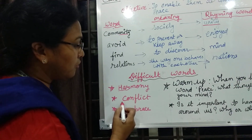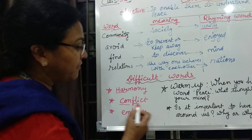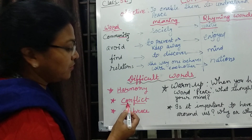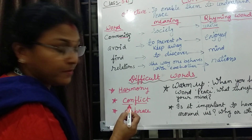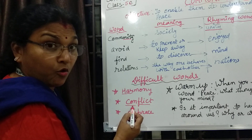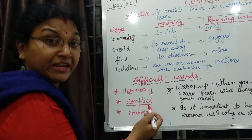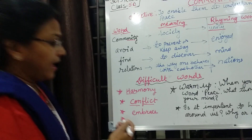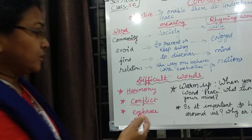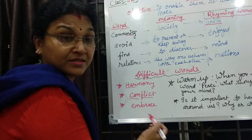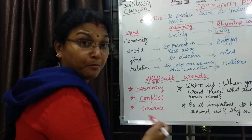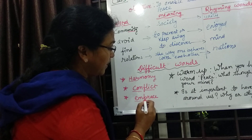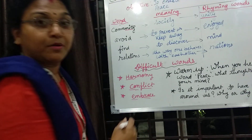The next word is conflict — con-flict. So here again we get two syllables: con and flict. And the last word is embrace — em-brace. We divide the word according to its syllables.